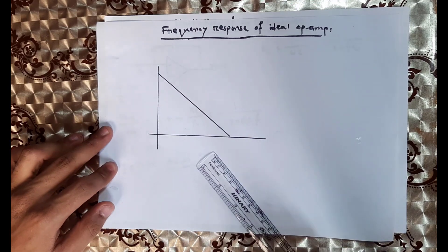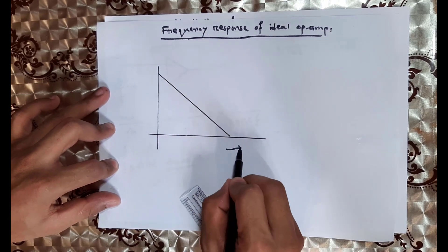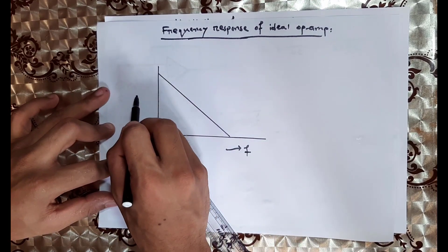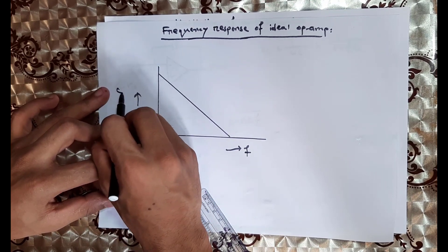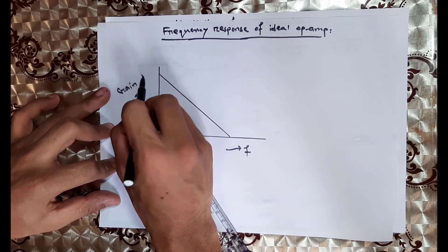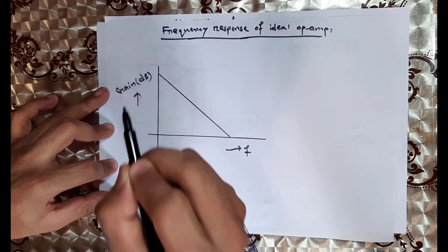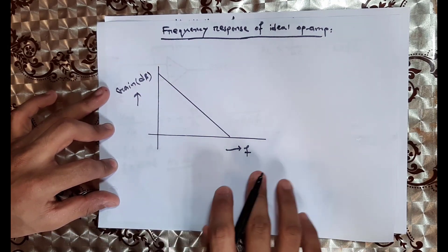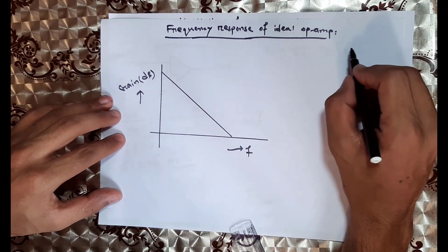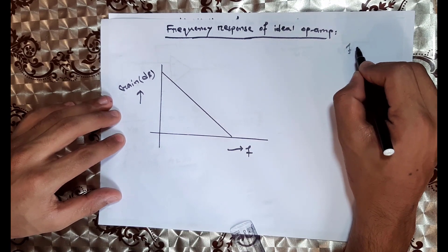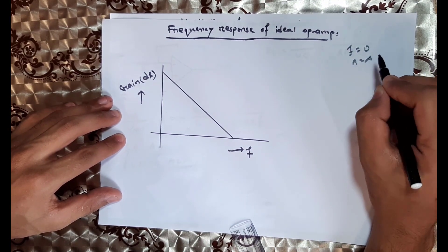So we have the frequency on the x-axis and the gain on the y-axis. We don't measure the gain in decibels here. We can see that at frequency 0 Hz, the gain is infinity.